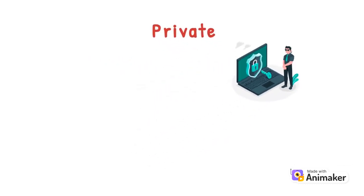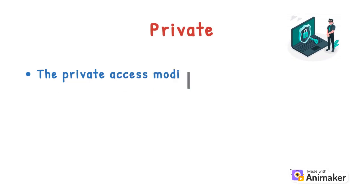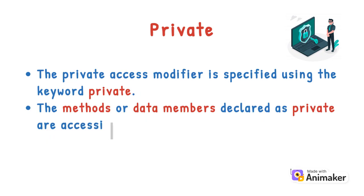Next we have Private. The private access modifier is specified using the keyword private. The methods or data members declared as private are accessible only within the class in which they are declared.